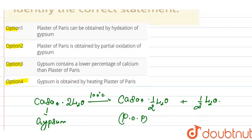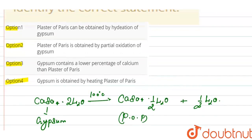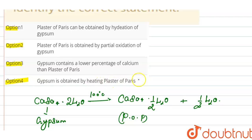So, plaster of Paris can be obtained by dehydration of gypsum. And Option 4 — that gypsum is obtained by heating plaster of Paris — is incorrect, because plaster of Paris is obtained by heating gypsum, not the other way around.